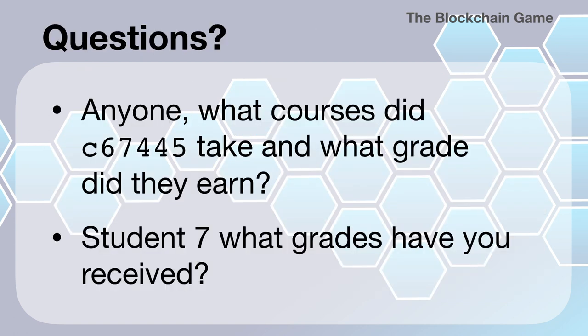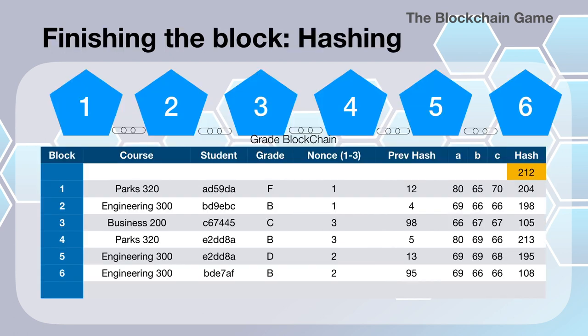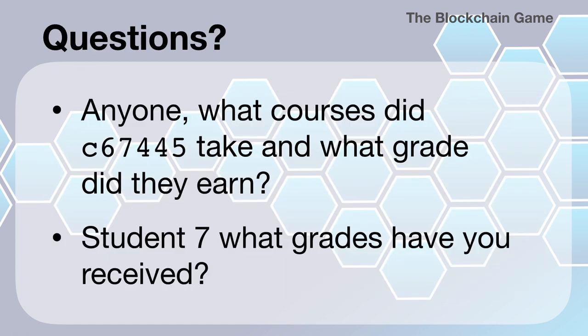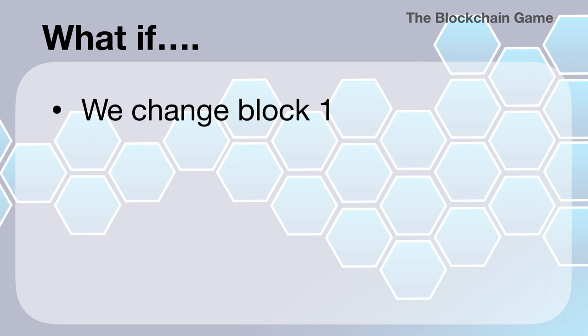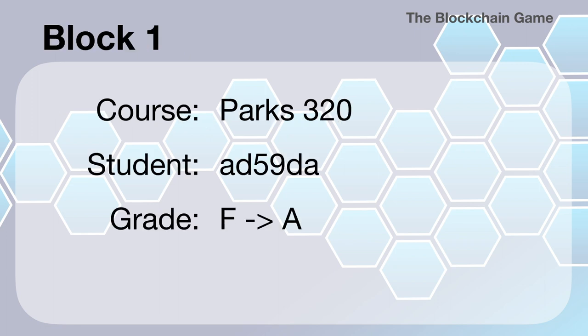We can also call on a student and ask them what grade they received. We ask student 7 to get their sheet out of their wallet to look and see where they are on this blockchain and what grade they received. We can then have some what-if scenarios — for example, what if we change block one? What if this student wanted to somehow hack the blockchain and change their grade to an A?